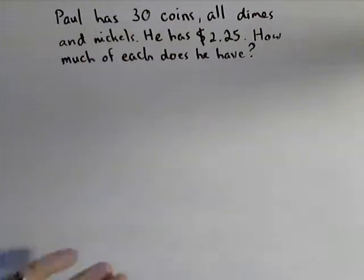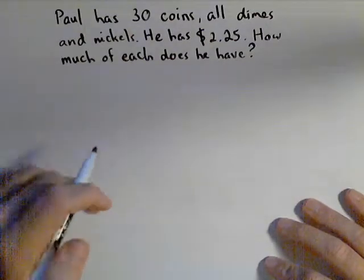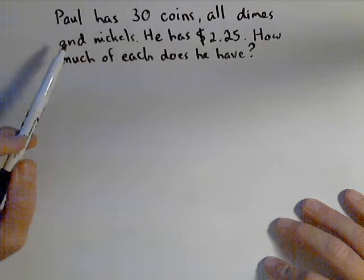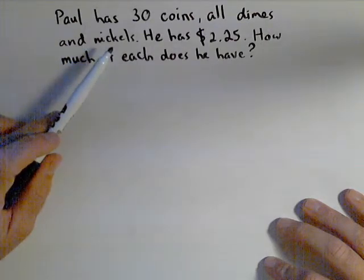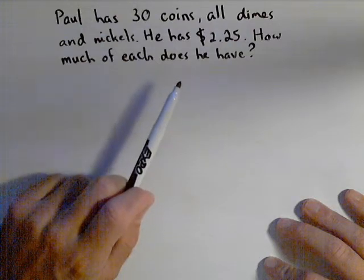So here's a typical problem, a coin problem. And this can be done with two types of coins, three types of coins, even four types of coins, but we'd need more information in those cases. Let's say Paul has 30 coins. All of them are dimes or nickels. He has a total of $2.25. How much of each does he have?